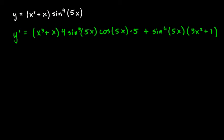Then we add the second times the derivative of the first: sine to the fourth of 5x times (3x squared plus 1), applying the power rule to each term. If you wanted, you could factor out sine cubed of 5x from each term, since one term has sine cubed of 5x and the other has sine to the fourth. But we'll stop there — that's the product rule applied to this example.